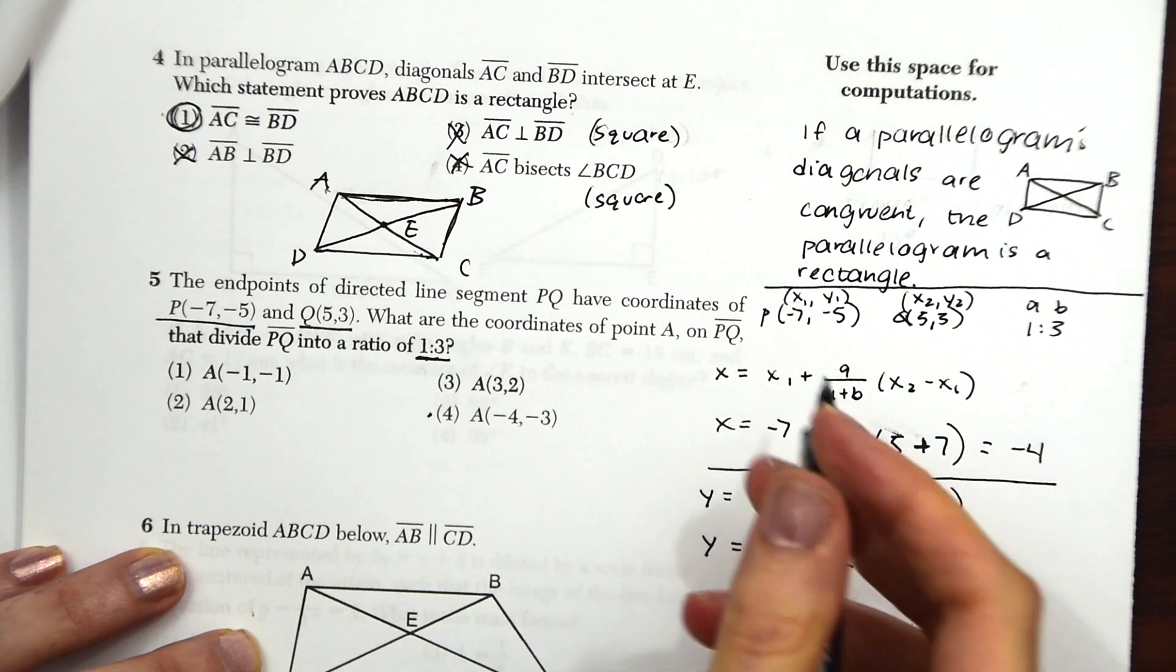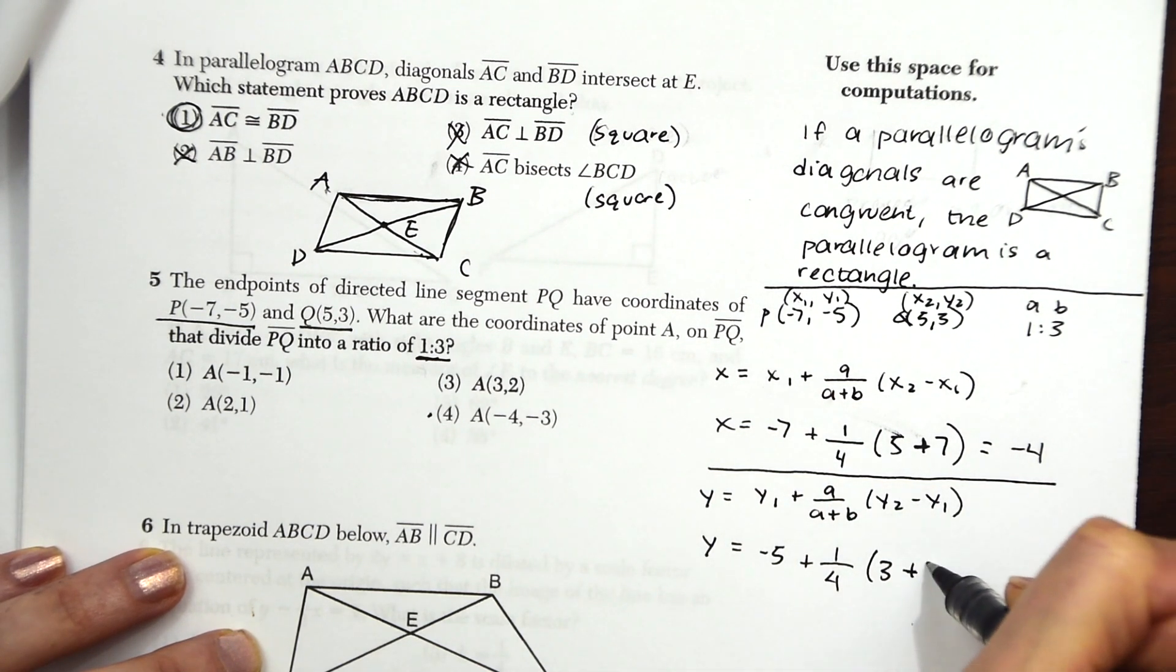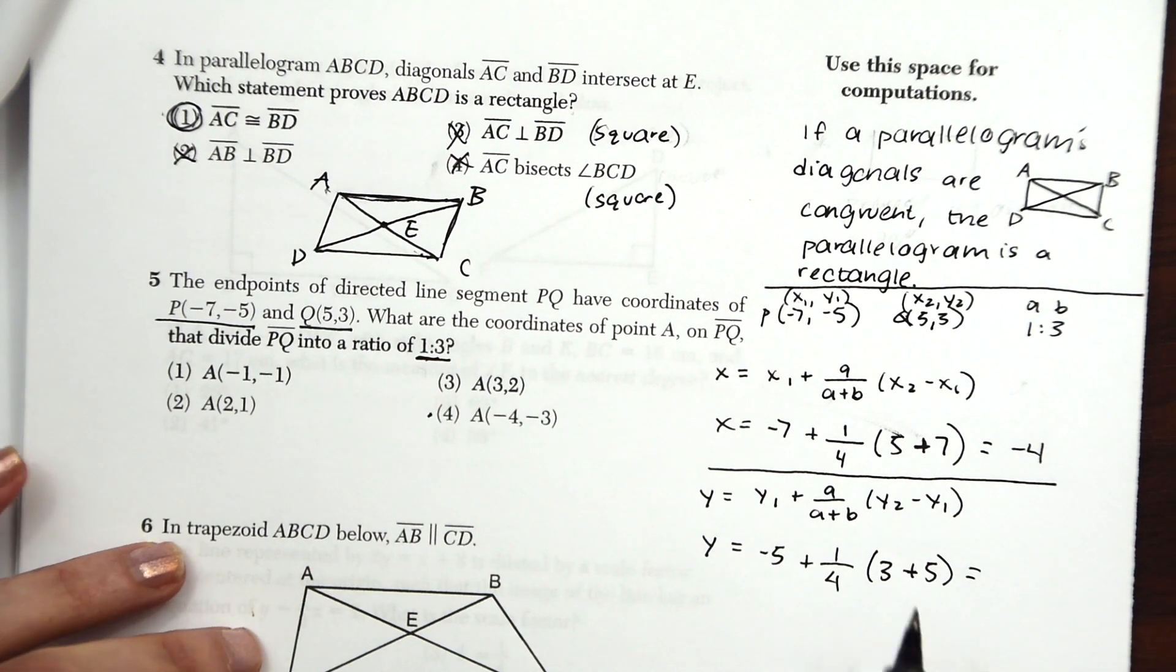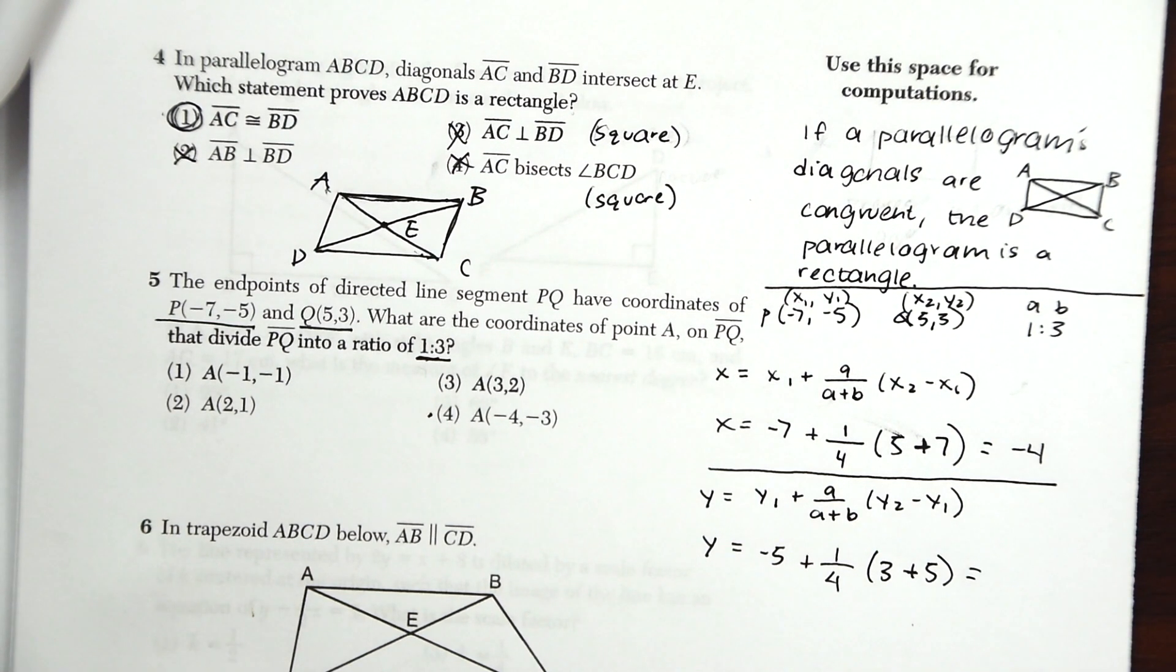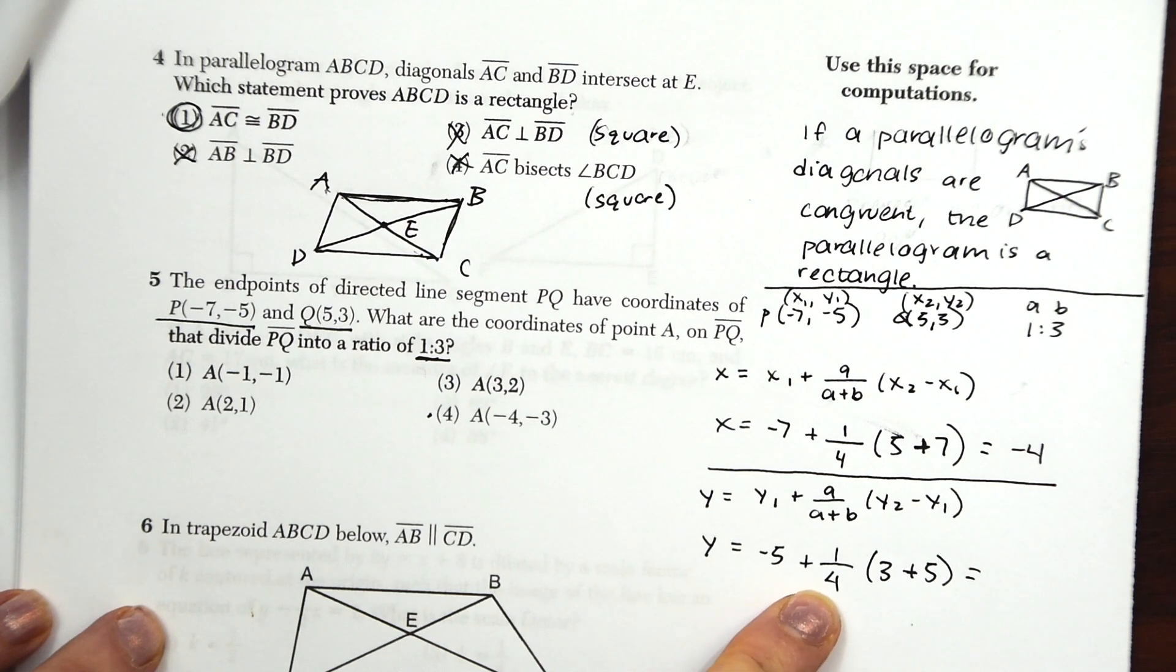So we're just going to realize that this is minus negative, so it's going to be a plus 5. So if we work this out, 5, 6, 7, 8 divided, this becomes 8 times 1 fourth.